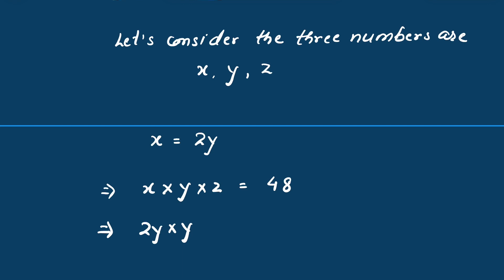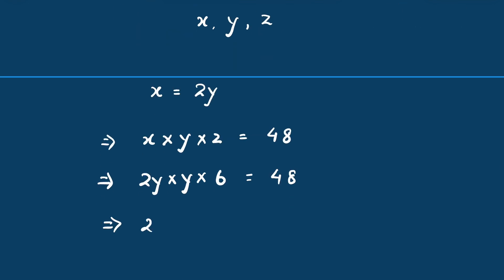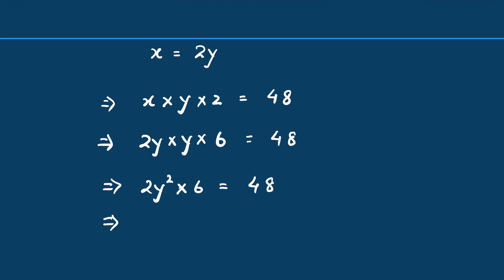x is 2y, and z is 6. So 2y times y times 6 equals 48. 2y times y is 2y², and 2y² times 6 equals 48. Let's remove 6 from this side by